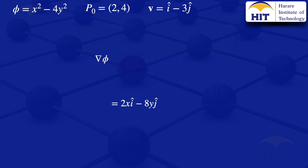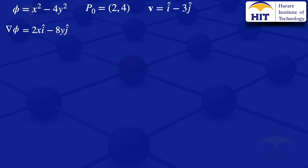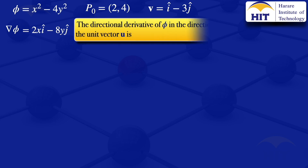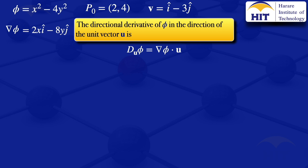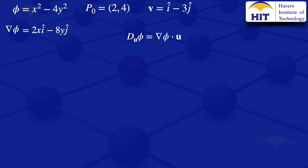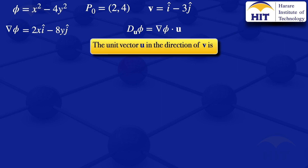The next step is to obtain the directional derivative of φ in the direction of v. By definition, the directional derivative of φ in the direction of a unit vector u is given by the dot product of grad φ and the unit vector u. That's how we find the directional derivative.